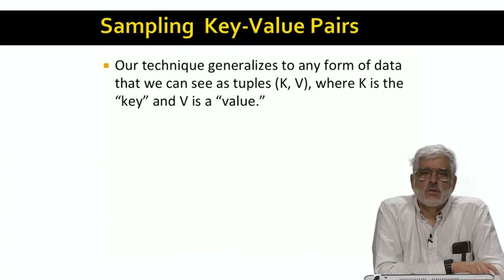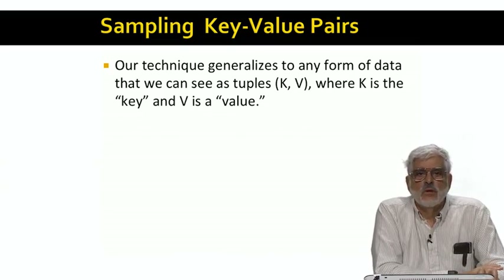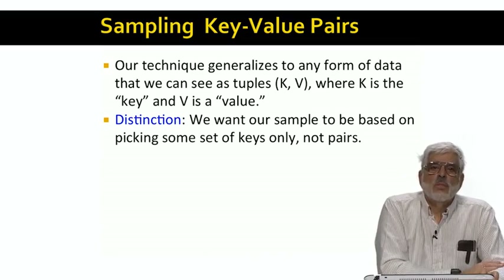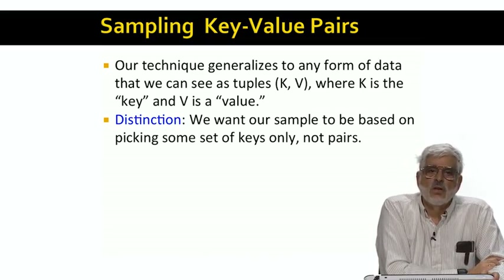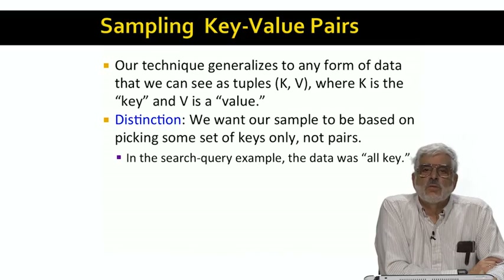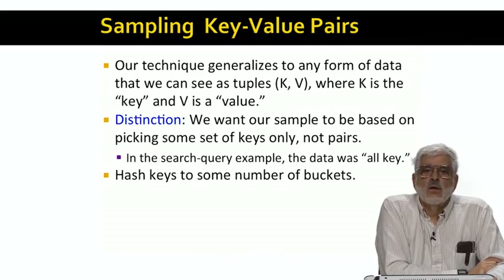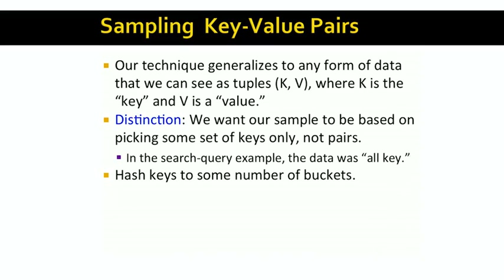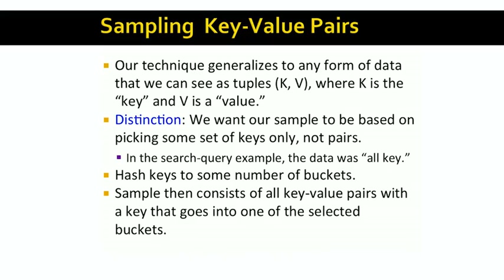The idea explained by example is really an instance of a general idea. We can see any form of data as key-value pairs. We can choose our sample by picking a random key set of the desired size, and taking all key-value pairs whose key falls into the accepted set, regardless of the associated value. In our example of search queries, the search query itself was the key, and the value was null — it was not really there. In general, we select our sample by hashing keys only. The value is not part of the argument of the hash function. We pick an appropriate number of buckets for acceptance and add to our sample each key-value pair whose key hashes to one of the accepting buckets.